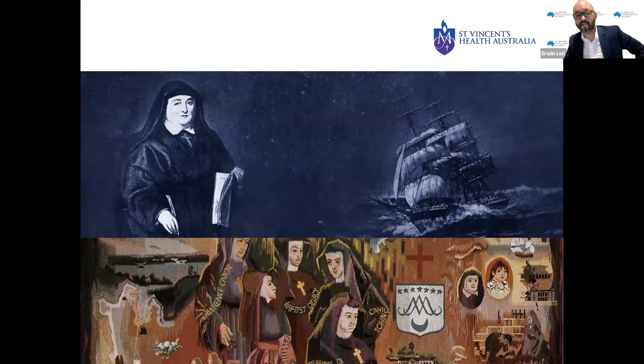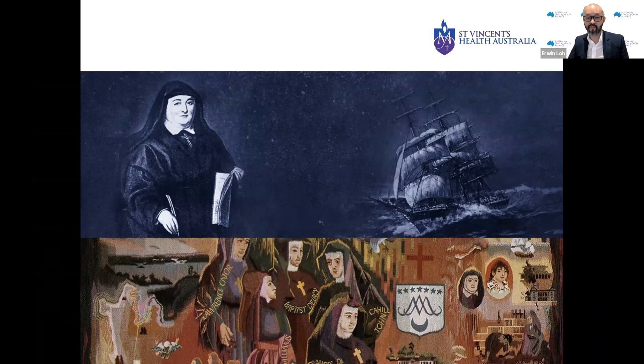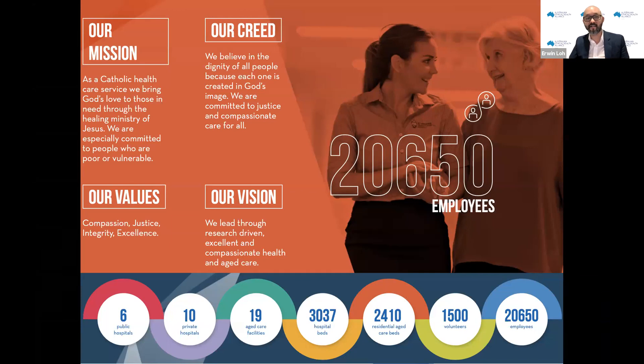A bit about St. Vincent's Health Australia. We were founded by Mother Mary Aikenhead, who founded the Sisters of Charity in 1815 in Ireland. In 1838, five Sisters of Charity nuns came to Australia, primarily to look after convicts coming from the UK. In 1857, they founded our first hospital, St. Vincent's Hospital in Sydney. What they gave us as an organisation is basically their values of compassion, justice, integrity and excellence, and the mission to be committed to bringing God's love to those in need, especially those who are poor and vulnerable. That mission is embedded into everything that we do at St. Vincent's and guides our ethical behaviour.